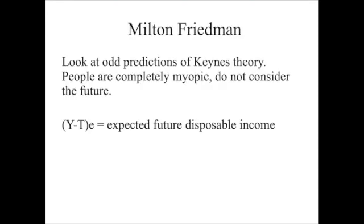Milton Friedman was an economist who started doing research in the 1950s, and he noticed that there are a lot of odd predictions of the Keynesian theory. In the Keynesian consumption theory, people are completely myopic — they don't think about their income in future periods. You make your decision to consume today based on your basic needs and your marginal propensity to consume out of your current, this-year income.